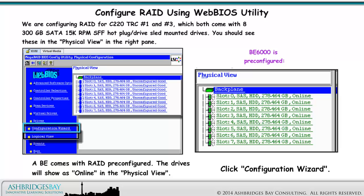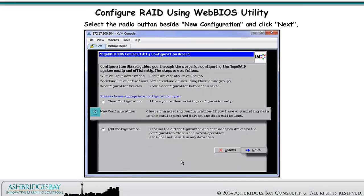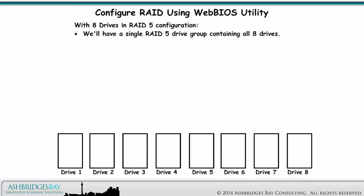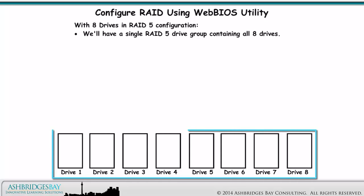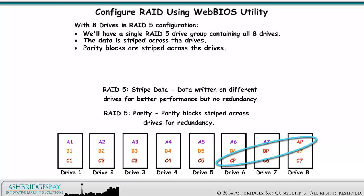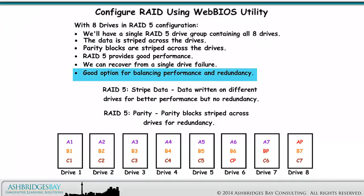Click Configuration Wizard. Select the radio button beside New Configuration and click Next. With eight drives in RAID 5 configuration, we'll have a single RAID 5 drive group containing all eight drives. Data is written on different drives for better performance but no redundancy. The parity block striped across the drives gives us redundancy. RAID 5 provides good performance and we can recover from a single drive failure, so RAID 5 is a good option for balancing performance and redundancy.